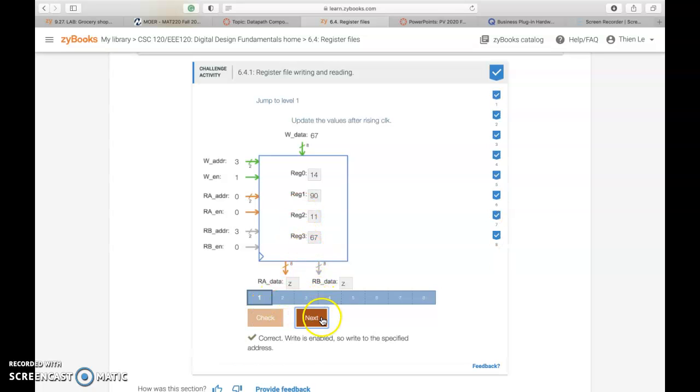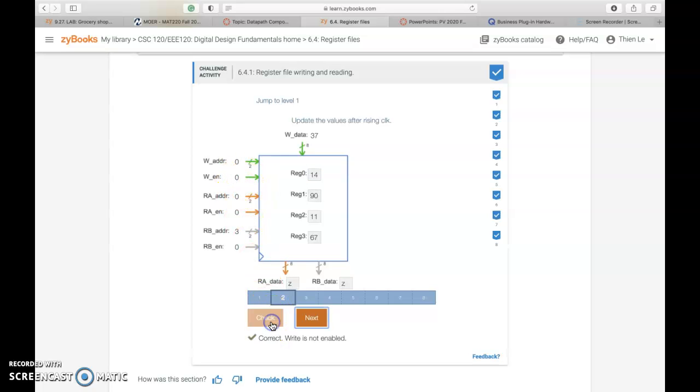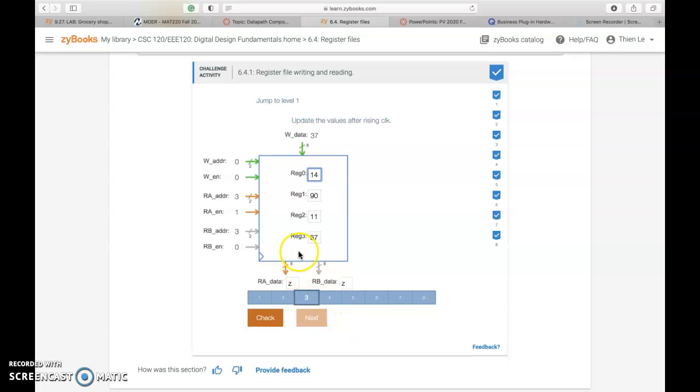Now the second problem: since all of the N, the enable RB and W is 0, we are not going to change anything. Next problem.